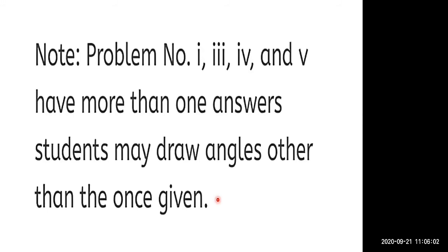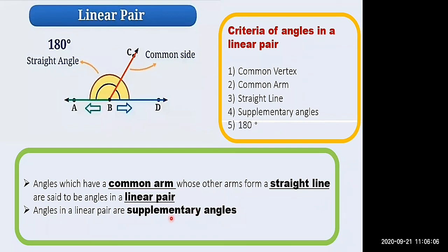Quick recap: angles which have a common arm whose other arms form a straight line are said to be angles in a linear pair. Angles in a linear pair are supplementary angles — they are always supplementary. The criteria: common vertex, common arm, straight line, supplementary angles, and the sum of the measures of the two linear pair angles is 180 degrees.